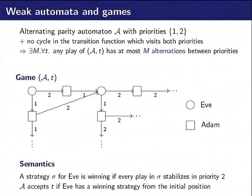A tree is accepted if the existential player has a winning strategy for this tree.